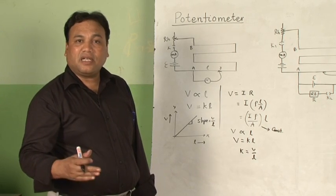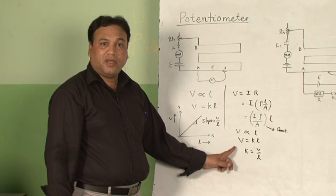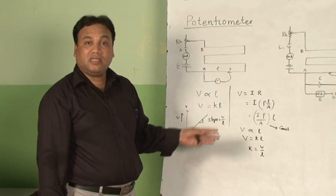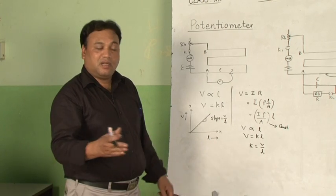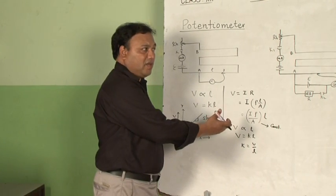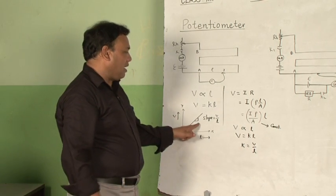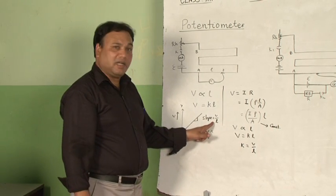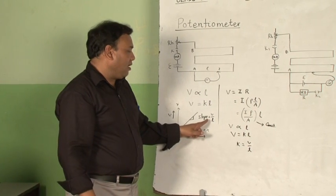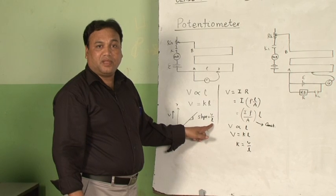In examination, a question comes like: state the principle of the potentiometer and how can its sensitivity be increased? Write that statement, draw the graph, and state that the potentiometer's sensitivity can be increased by increasing the length of the potentiometer wire.